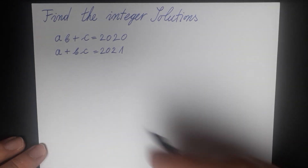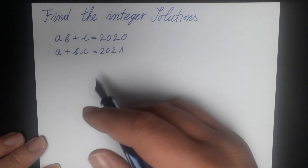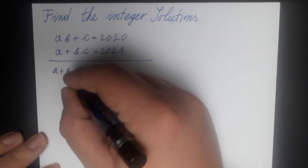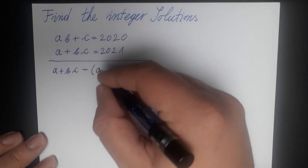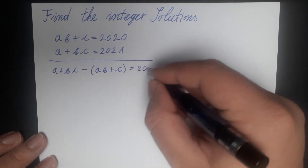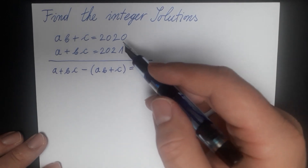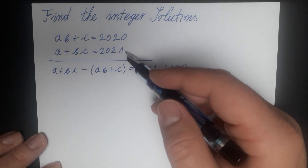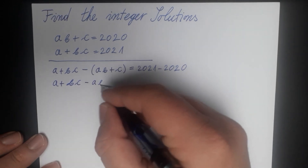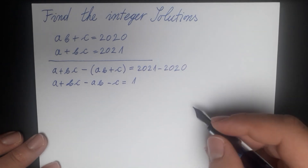The difference between 2020 and 2021 is 1, so let's subtract these two equations. We are going to have a plus bc, and we are going to subtract ab plus c. On the right side we have 2021 minus 2020, because we subtracted the first equation from the second equation. This gives us a plus bc minus ab minus c equal to 1.